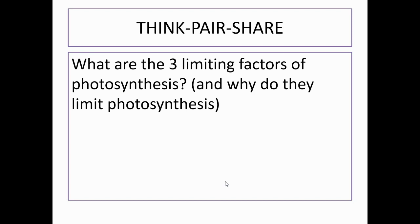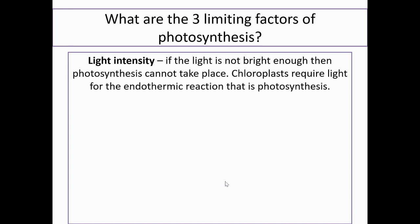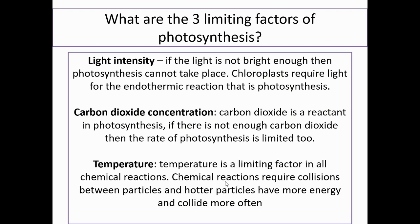Welcome back. Hopefully you had a good conversation. The three limiting factors: light intensity — if the light is not bright enough, photosynthesis can't take place, as chloroplasts require light for the endothermic reaction. Carbon dioxide concentration — CO2 is a reactant, and if there's not enough, photosynthesis will not happen fast enough. Temperature — chemical reactions require collisions between particles; hotter particles have more energy and collide more often. These are the explanations you need to know for the explain task today.